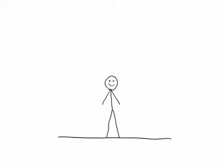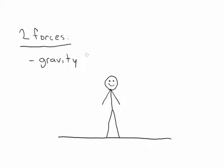Let's work through an example. Let's consider the simplest possible situation: a person standing on level ground. For a person standing on level ground, there are two forces that are relevant. One of those forces is gravity — the force being exerted by the earth on this person, pulling them down. The other force is the force that the ground exerts on this person, pushing them up, and that is called the normal force.